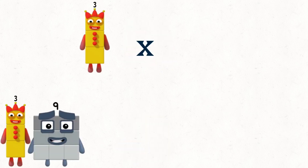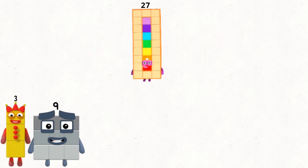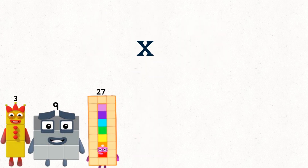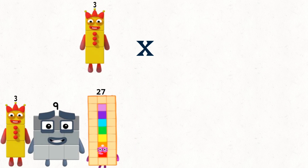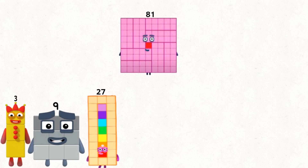3 times 9 equals 27. 3 times 27 equals 81.